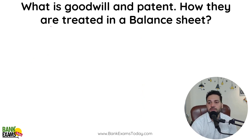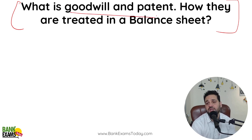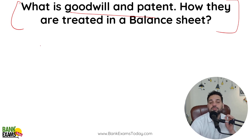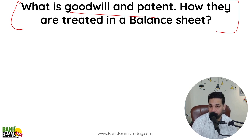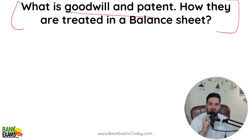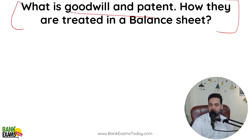Another question asked: what is goodwill and patent, and how are they treated in a balance sheet? Goodwill and patent are intangible assets — you cannot see them physically, but they are assets. On the balance sheet, they appear on the asset side. You should have a basic understanding of the balance sheet equation: one side has capital and liabilities, and the other side has assets. This understanding is very important.